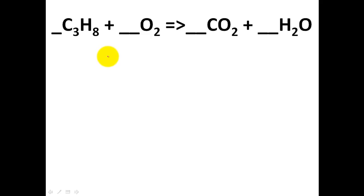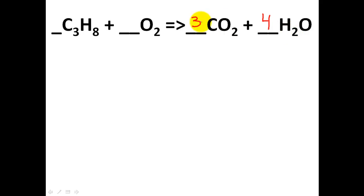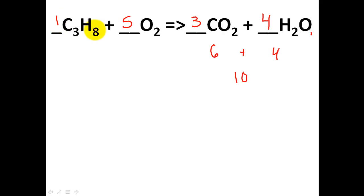In this problem, oxygen is the most common element, so I'll balance that last. I'm not going to do an atom inventory this time — just work it out. I have three carbons, and I need three carbons on the other side: three times one. Carbon's done. I have eight hydrogens and two hydrogens, so four times two gives me eight hydrogens. Now oxygen: three times two gives me six oxygens plus four times one gives me four oxygens — altogether ten oxygens, so five times two. The coefficients are one, five, three, and four. Pretty easy when you leave the most common element to the very end.